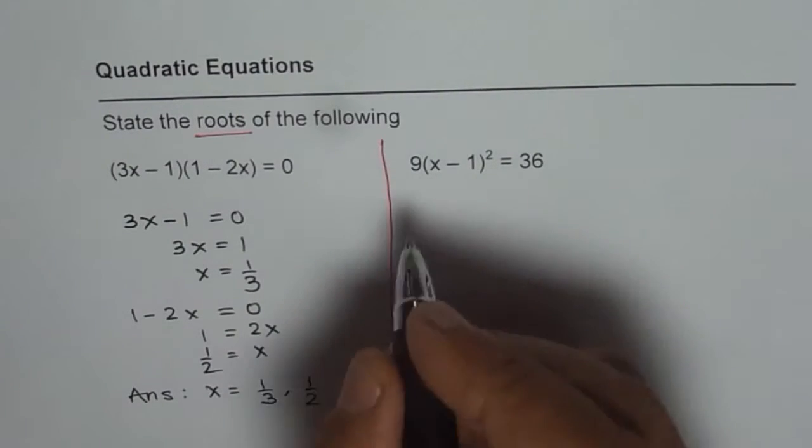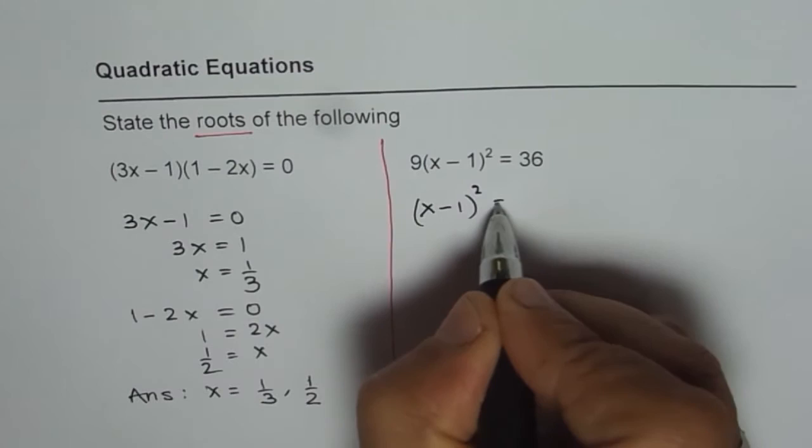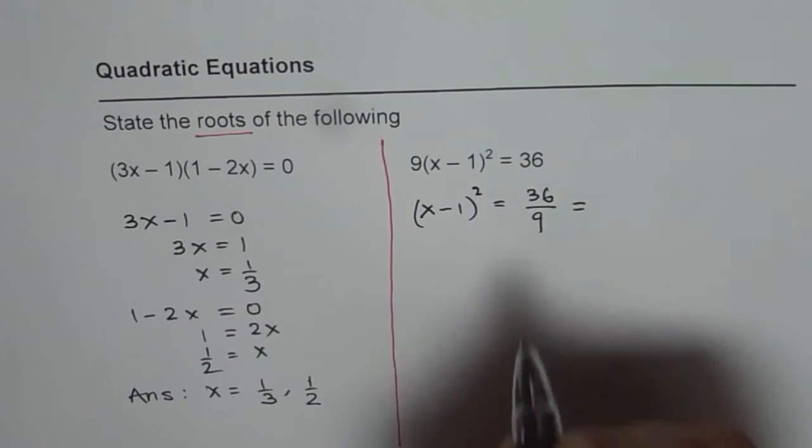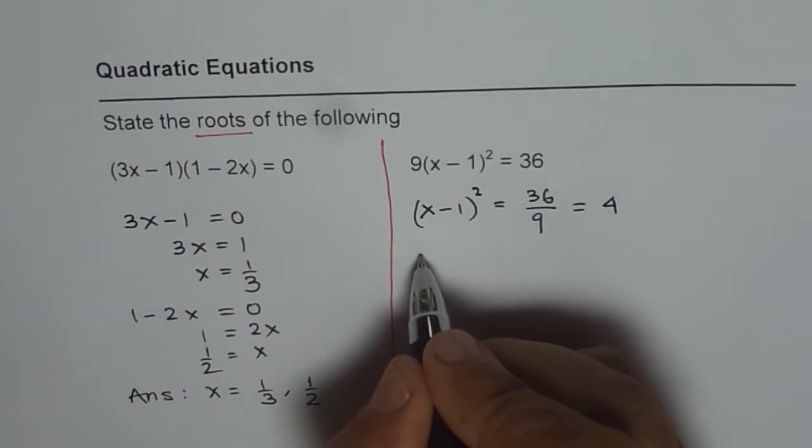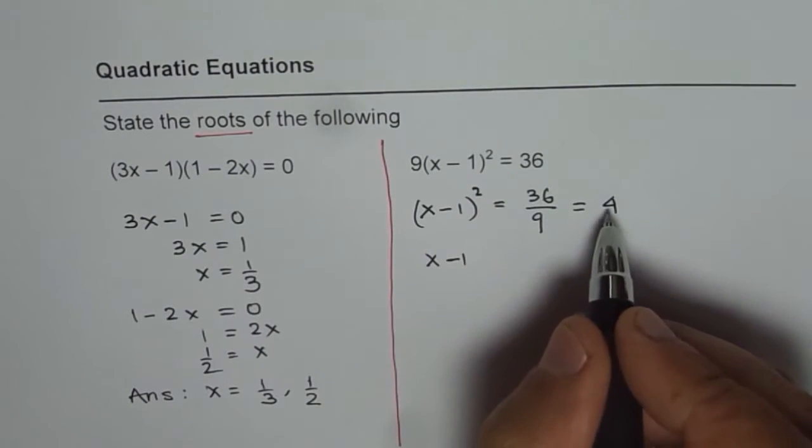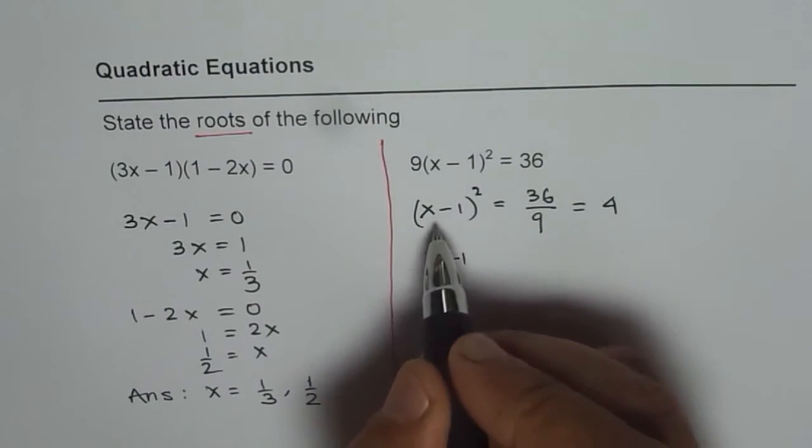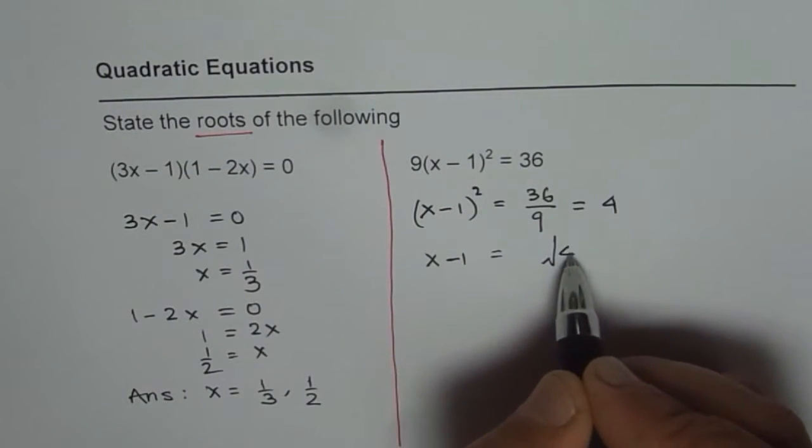First step is divide by 9. So we get x minus 1 whole square equals 36 divided by 9. Now 36 divided by 9 is 4, so let's write 4 here. So we have x minus 1 whole square equals 4. Now let us square root both sides. If I do square root, I get x minus 1, and on the right side I get square root of 4.